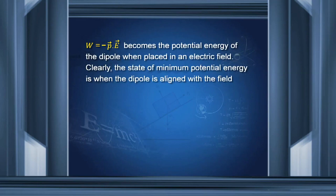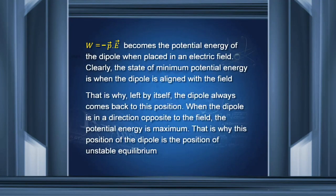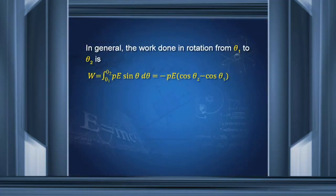The state of minimum potential energy is when the dipole is aligned with the field — this is the position of stable equilibrium. When the dipole is antiparallel to the field, the potential energy is maximum. In general, the potential energy in a rotation from θ₁ to θ₂ is −pE(cosθ₂ − cosθ₁).